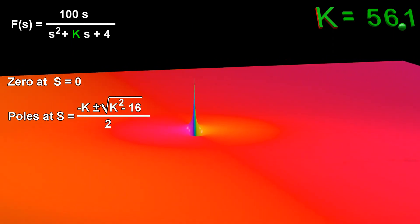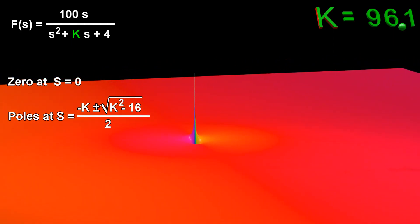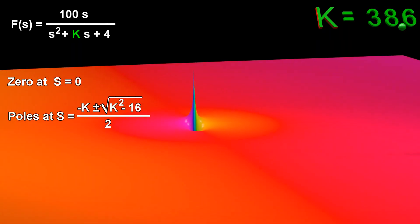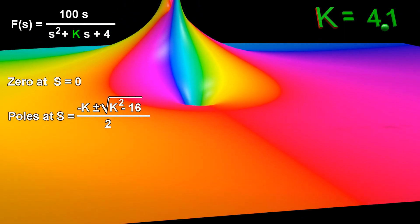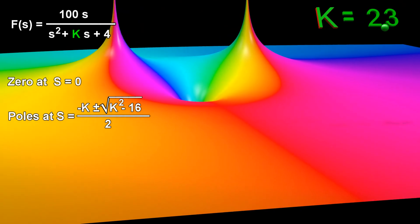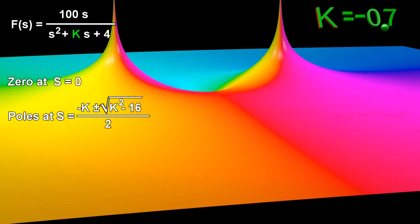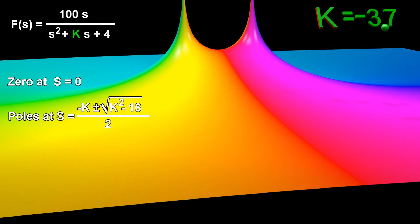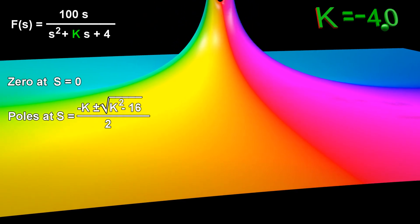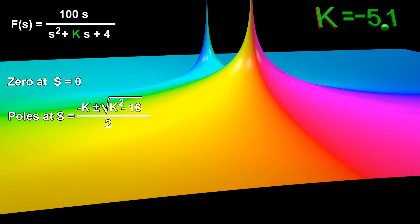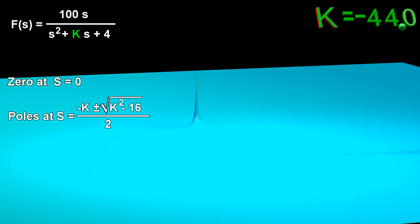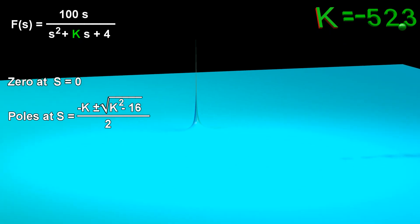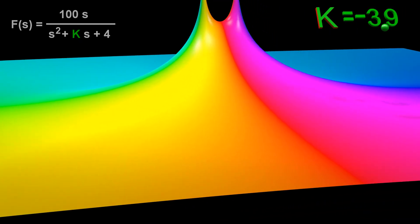K is a constant. If we change the value of this constant, then we change the locations where the magnitude of the function approaches infinity. As K becomes very large, one of the poles moves far away while the other pole approaches the location of the zero. When K is exactly equal to four, the two poles are at the same location. The two poles are also at the same location when K is exactly equal to negative four. And when K becomes a very large negative number, one of the poles again moves far away while the other pole again approaches the location of the zero.